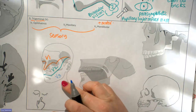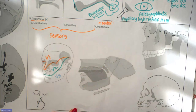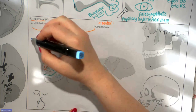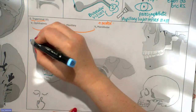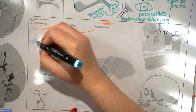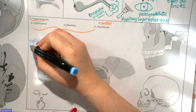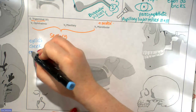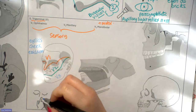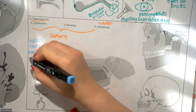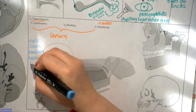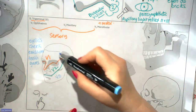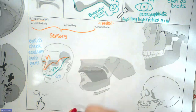That covers the sensory innervation of the skin of the face on the outside, but it also contributes to sensory innervation of internal structures such as the eyelids, the cheek mucosa, the eardrum or tympanic membrane, the teeth, and the gums. So it's very important for sensory innervation both outside and inside.